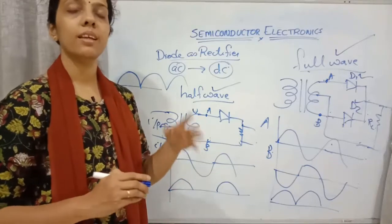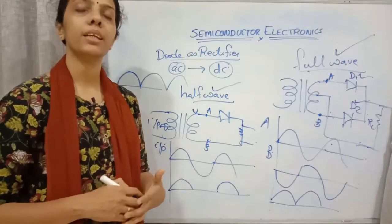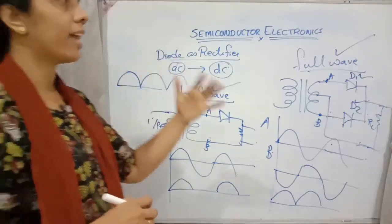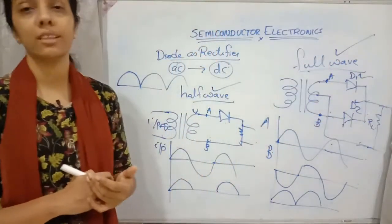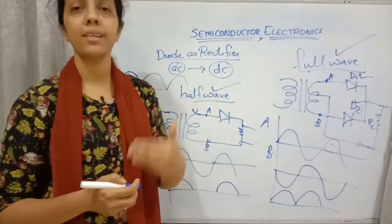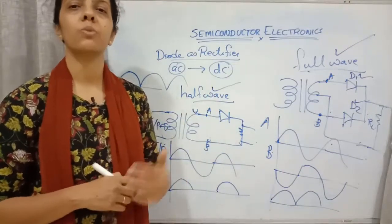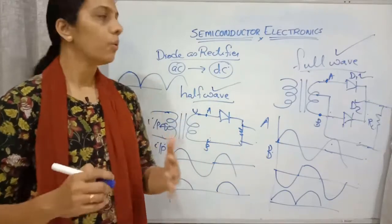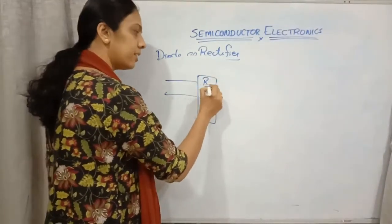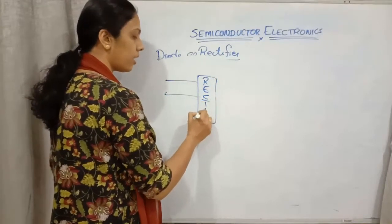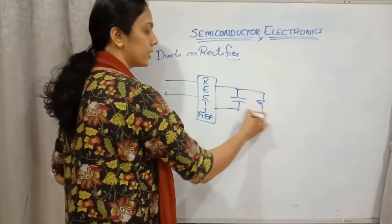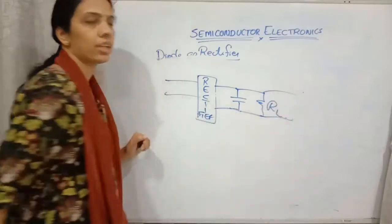To convert this into a perfect unidirectional current, we use a capacitor. If we connect a high value capacitor along with or across the load resistance — after the rectifier — we will be getting a unidirectional current at the output.